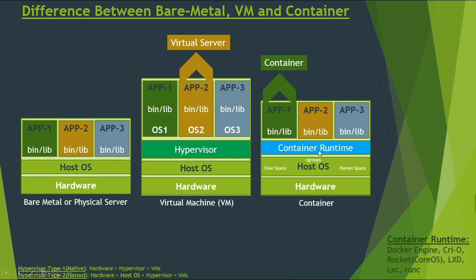How does this container runtime virtualize our OS? It uses mainly three things: one is cgroups, and second is user space and kernel space — together called namespaces. Namespaces allow us to virtualize system resources like file system or networking. Cgroups provide a way to limit the amount of resources like CPU and memory that each container can use. A container is run using the container runtime, and if we use Docker Engine as the container runtime then the container is called a Docker container.